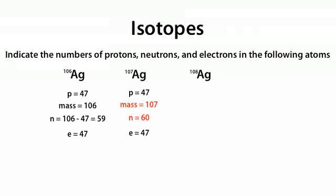Next, we're given Ag-108. Ag is still silver. Silver has an atomic number of 47, so its number of protons equals 47. Its mass is again different — equal to 108. The number of neutrons is also different: 108 minus 47 equals 61 neutrons. The number of electrons is still equal to the number of protons, so the number of electrons equals 47.